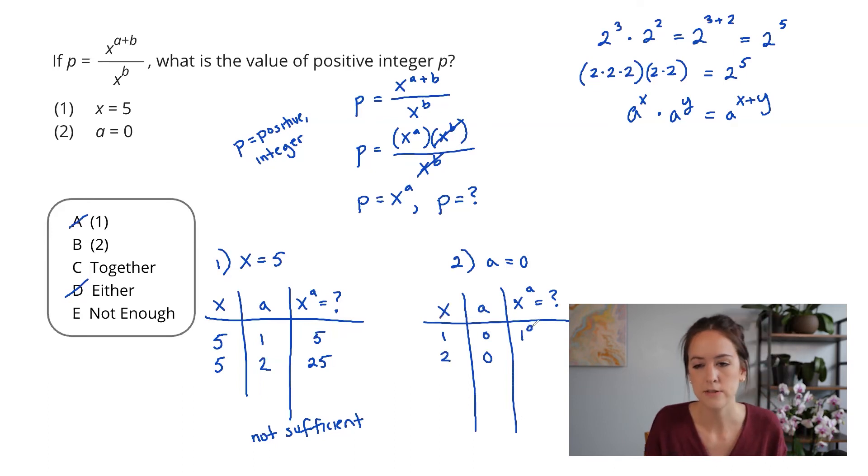And this is actually a spot where you need to know another exponent rule, which is that anything to the zeroth power is one. So two to the zeroth is also one. 17 to the zeroth is also one. I'm going to add that to our list over here. Anything to the zeroth power always equals one on the GMAT.